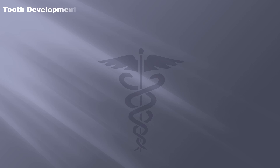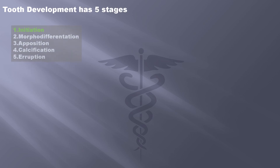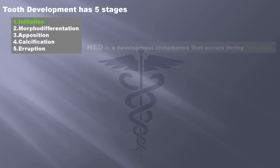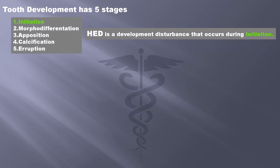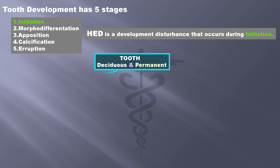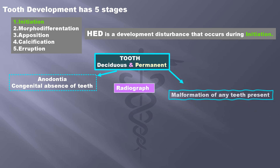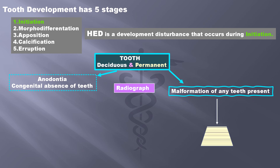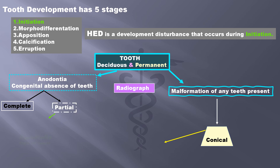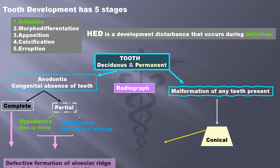The development of a tooth occurs in five stages: initiation, morphodifferentiation, apposition, calcification, and finally eruption. HED is a developmental disturbance that occurs during the initiation stage. Both the deciduous and permanent teeth are affected. There is anodontia, that is congenital absence of teeth, and radiographs can be used to confirm this. There may be malformation of teeth present and they look conical in shape. Anodontia may be complete or partial. When one or two teeth are missing it is called hypodontia; when more than six are missing it is called oligodontia. All these lead to defective formation of the alveolar ridge since it doesn't develop in the absence of teeth.